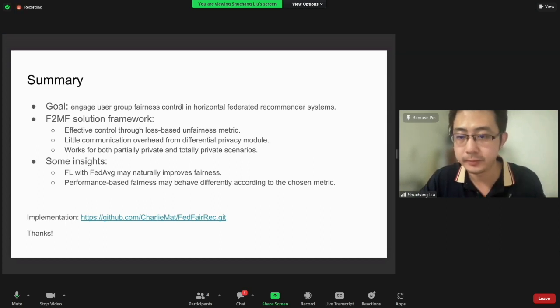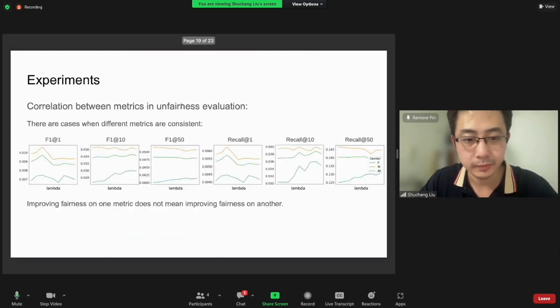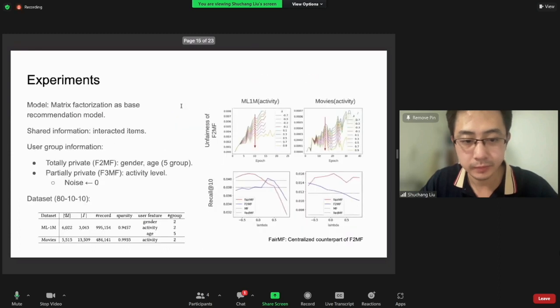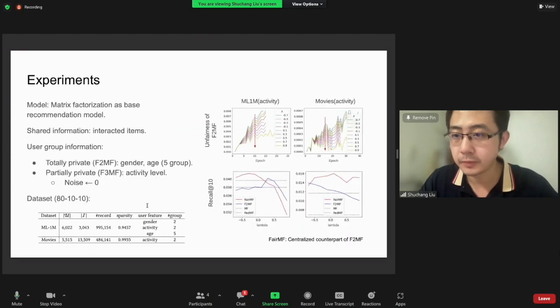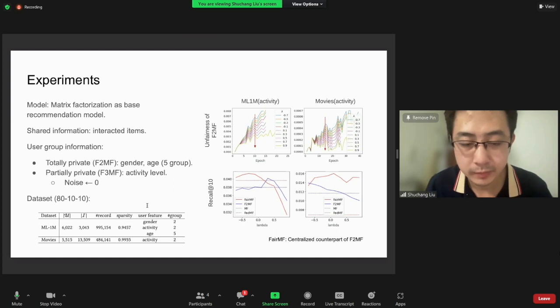At the moment I don't see any questions, but I have a question myself. You tried out several user features, and particularly for age you looked into several user groups. What's your observation—is it the number of groups that plays a big role, or is it how it's distributed? If you have one bigger group than the other, like size of group, how does it affect the overall results?